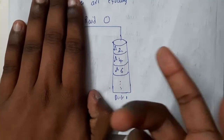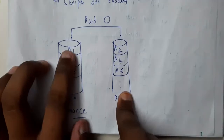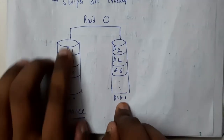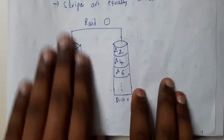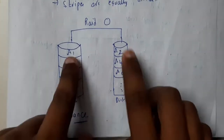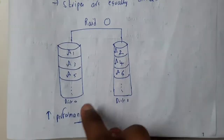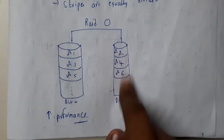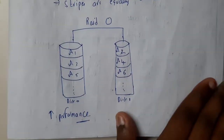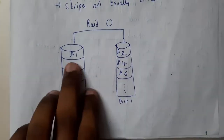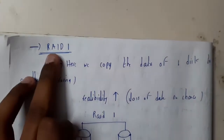The only disadvantage of RAID 0 is that if a particular disk fails, you cannot retrieve the data because the remaining parts are also of no use. If one disk fails, accessing the data becomes really complex since you only have half the parts. So RAID 0 increases performance but has no fault tolerance.